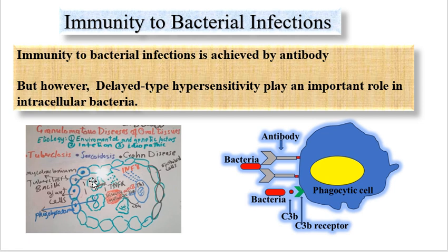If someone gets infected by Mycobacterium tuberculosis, this bacterium will be taken up by macrophages. The macrophages will process it and the processed peptides derived from Mycobacterium tuberculosis will get presented in association with MHC class 2 to T helper number one, so T helper number one gets activated and will produce interferon gamma.